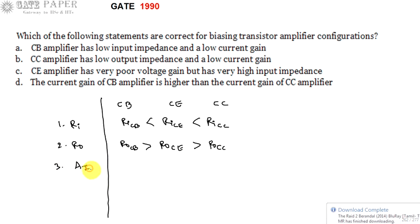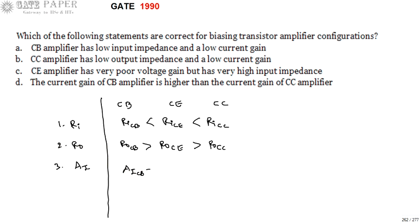Third, current gain AI. The current gain of common base is approximately equal to 1, which is unity current gain. The current gain of common emitter is slightly smaller than that of common collector. Common collector current gain is very high compared to the other two, while common base has unity current gain.